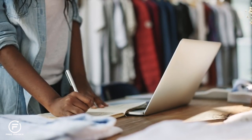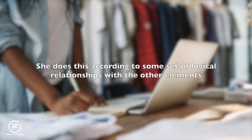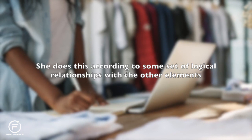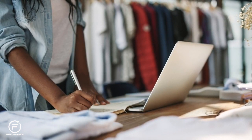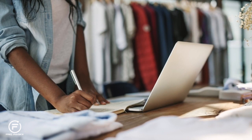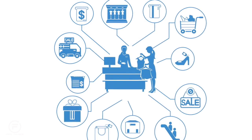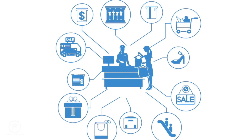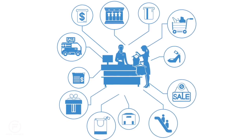When the shop owner decreases the price of some product, she does this according to some set of logical relationships with other elements — because she believes it will attract more customers, or because they've just received a discount delivery, or they're overstocked, etc. The shop owner is acting logically because she is acting in accordance with the logic of being a shop owner: the set of interrelationships with other things that this entails.